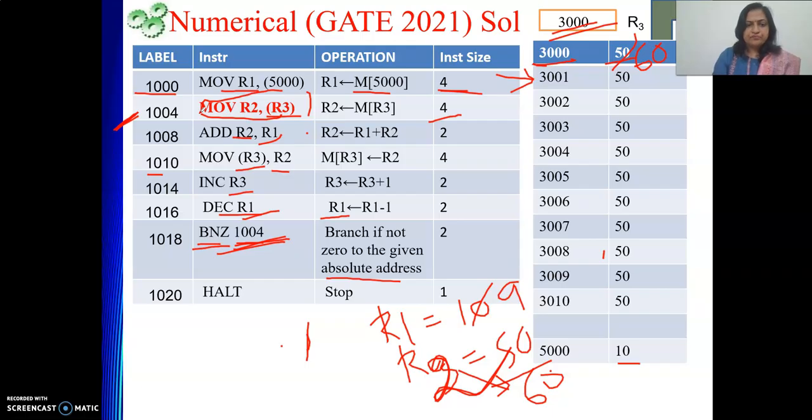Now see in the first pass of the loop the value of 3000 has become 60. And in the next pass what we are going to do? Just see, R3 is holding 3001 now. So R3's data is given to R2, that is nothing but 50. With this 50 I will be adding R1. What is R1 right now? 9. So 9 plus 50 will become 59. That 59 will be stored there. So now after this part it will become 59.